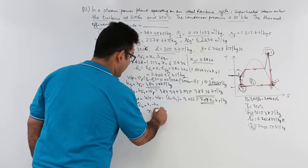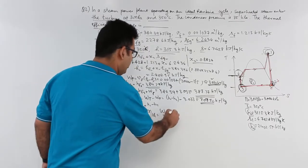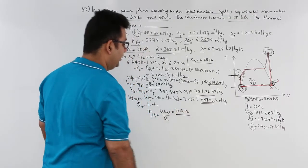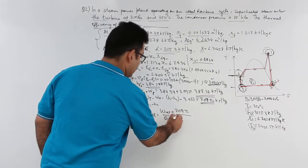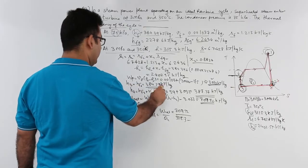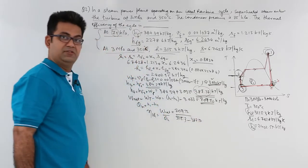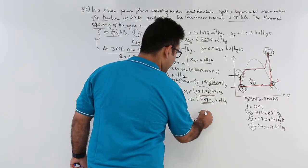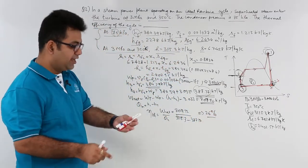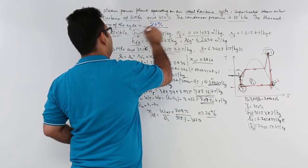So, net work output is that, by heat input which is H1, 3115.3 minus H4 which is 387.37. So, when you do the calculations over here, you will get the answer as 26%. So, the entire cycle is having an efficiency of 26%.